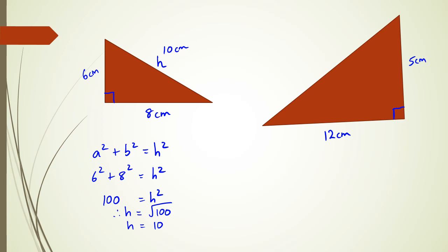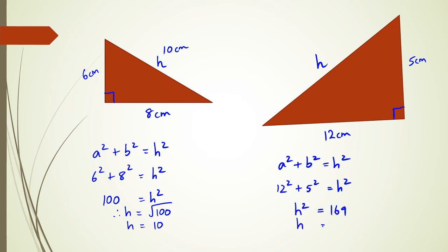Let's look at another example. This triangle has sides of 12 centimeters and 5 centimeters. Applying a squared plus b squared equals h squared: 12 squared plus 5 squared equals h squared, so h squared equals 169. Therefore h equals the square root of 169, which equals 13 centimeters.